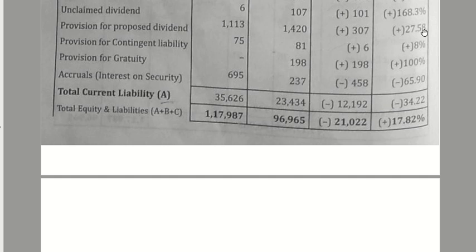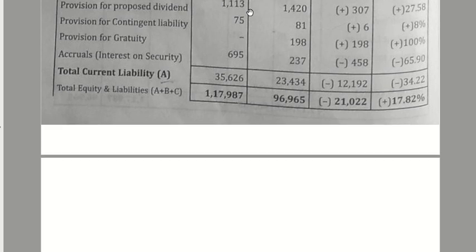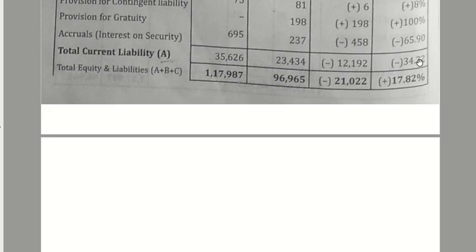Provision for proposed dividend: last year 1,113, current year 1,420 — increase of 307; 307 divided by 1,113 into 100 equals 27.58%. Provision for contingent liability: 8% increase. Provision for gratuity: 100% increase (last year was nil). Accruals: 65.90% increase. Total current liabilities. When you total shareholders' fund, long-term liabilities, and current liabilities, you get the total equity and liabilities — here the percentage change is a minus figure of 17.82%.